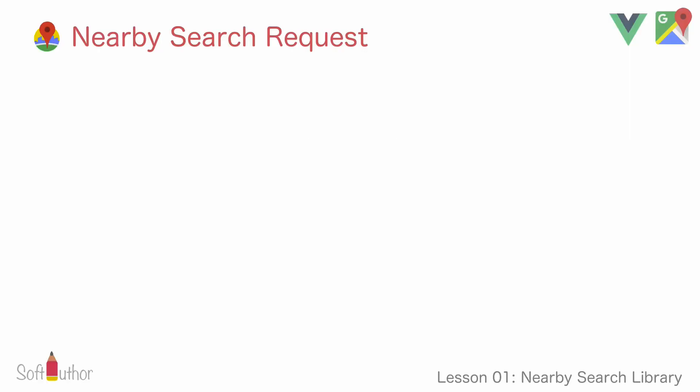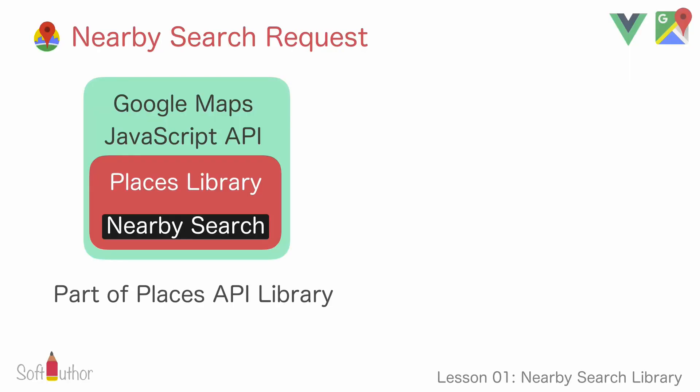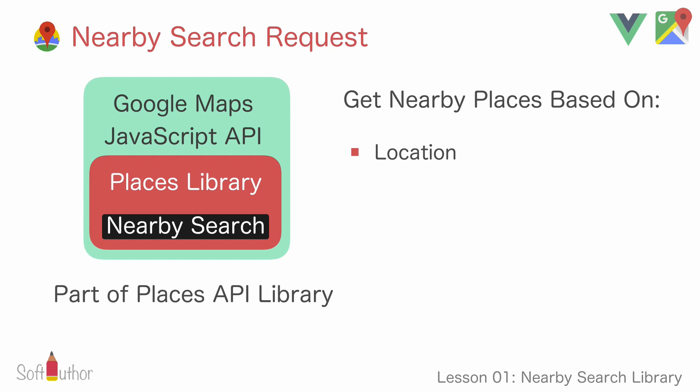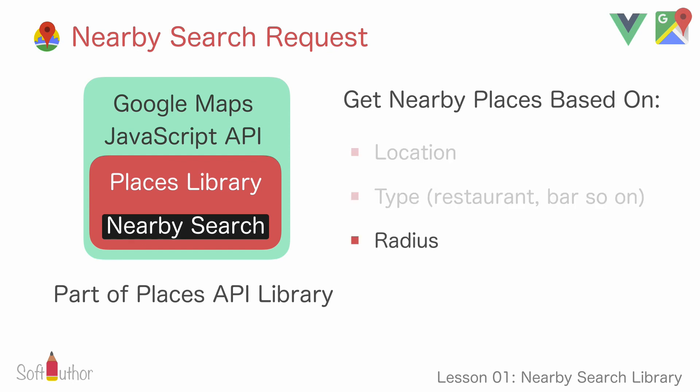The first thing — what is Nearby Search? Nearby Search is a part of the Google Places library in the Maps JavaScript API. It allows us to get different places based on location, which could be either the user's current location or any other location. It also allows us to filter the search results based on location, type, radius, and so on.